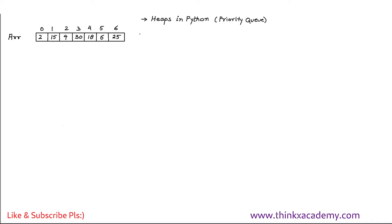A heap data structure is a binary tree representation of a given array. So let's assume we are given an array with items 2, 15, 4, 30, and so on, along with their index positions. What we want to do is represent this array in the form of a binary tree, which we will call a binary heap.